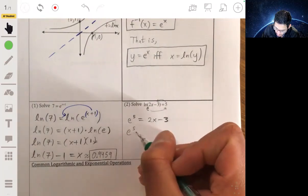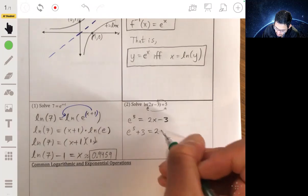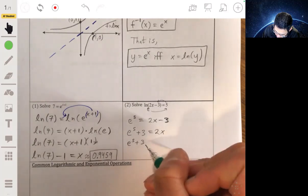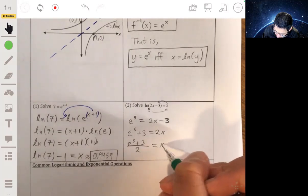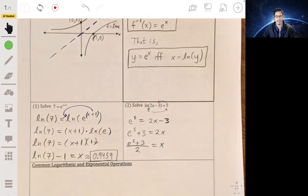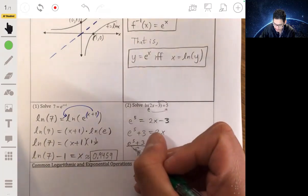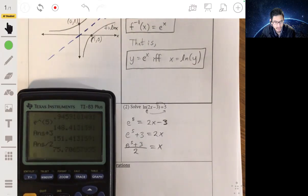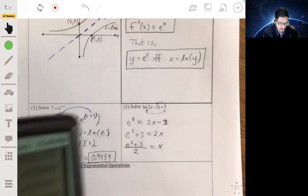And then all you have to do is solve for x by using algebra. We go e to the 5 plus 3 equals 2x. Divide both sides by 2. And e to the 5 plus 3 all over 2 equals x. And again, we can just leave it to our calculator. Because remember, e is just a number. E is about 2.71. So we can go e to the 5 plus 3 divided by 2. And we'll get that. It's about 75.7.